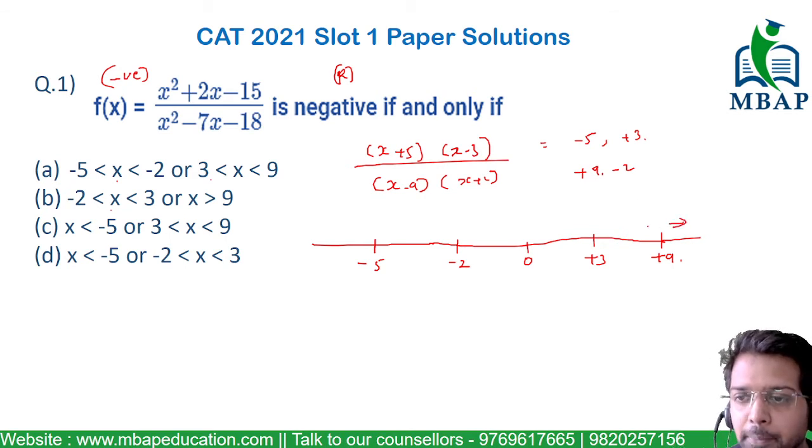Certainly, if I check any number which is more than 9, all the values of x + 5, x - 3, x - 9 and x + 2 will become positive and the whole expression or the function will become positive. So 9 beyond on this number line will become positive.